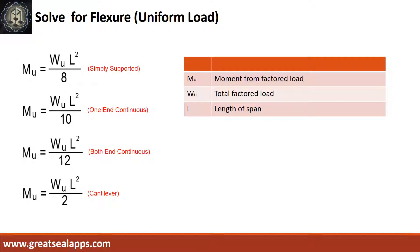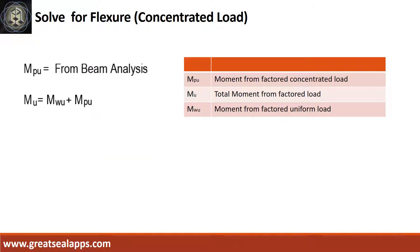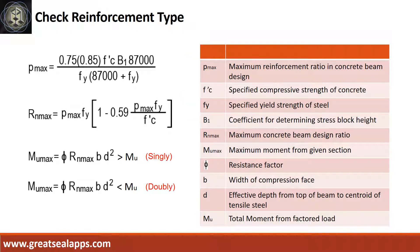Use the moment formula based on the support type. Solve the moment from concentrated load, if any, and get the total maximum design moment from uniform load and concentrated load. Check the reinforcement type — whether singly or doubly reinforced — by first getting ρmax, then rnmax, and finally the maximum moment for the given section, Mumax.